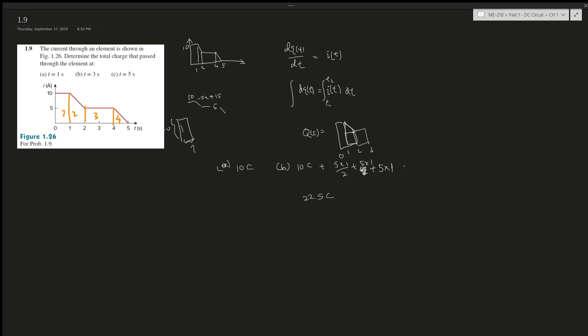The last bit is 5 times 1 over 2, which is another 2.5, giving you 25 coulombs total.